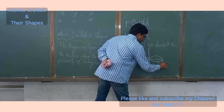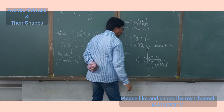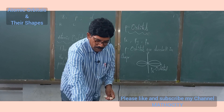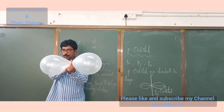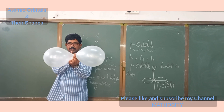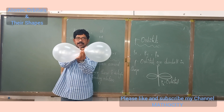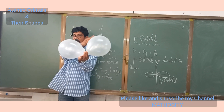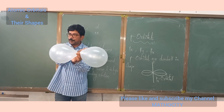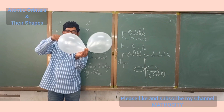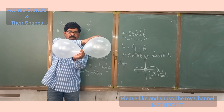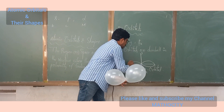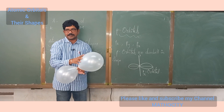The P orbital starts from the L shell. I will show the shape of the P orbitals. This is the Px orbital — the two electrons revolve round the nucleus within this region. This is the nucleus, and within this region the electron cloud revolves. The two electrons present in the Px orbital revolve within this region along the x-axis.